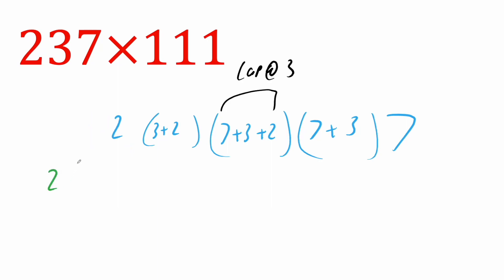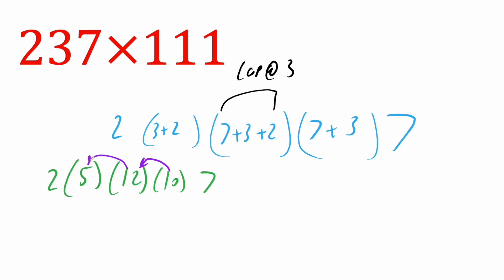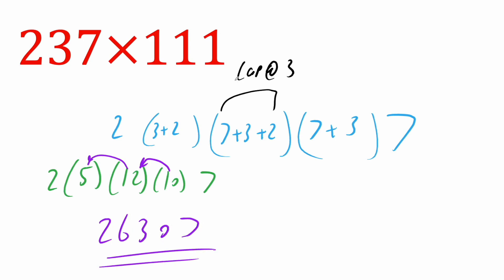So we're going to get: two, parentheses three plus two is five, seven plus three is 10 and 10 plus two is 12, seven plus three is 10, and we have a seven. Now with the parentheses, it needs to be a one-digit number, but this is two digits, so we'll need to carry the one. This becomes 13, but again we need to carry the one, and so this becomes a six. Our final answer is 2, 6, 3, 0, 7.